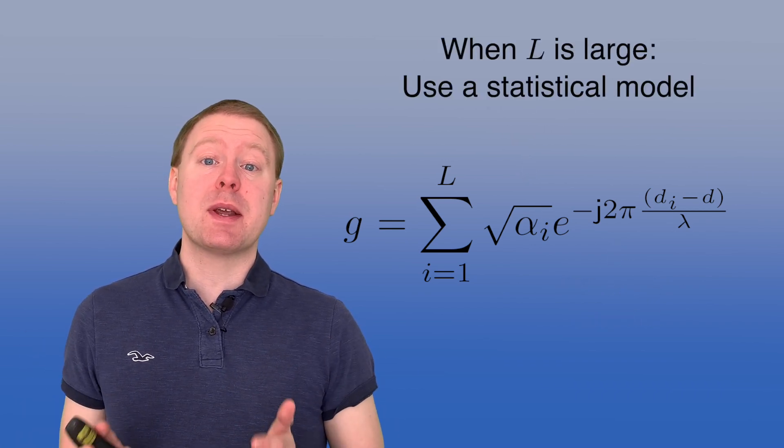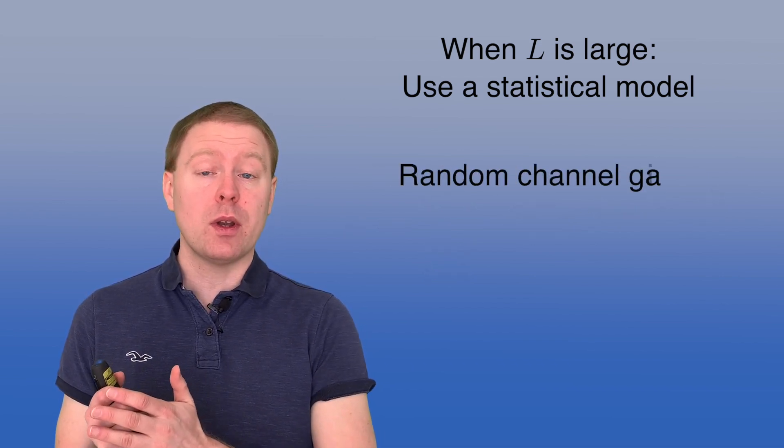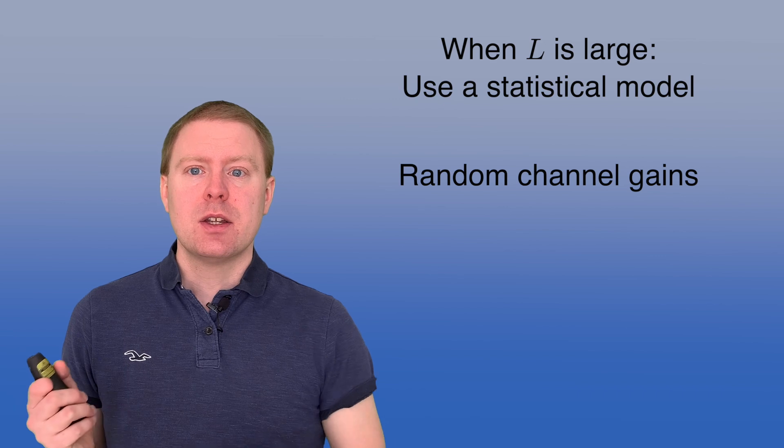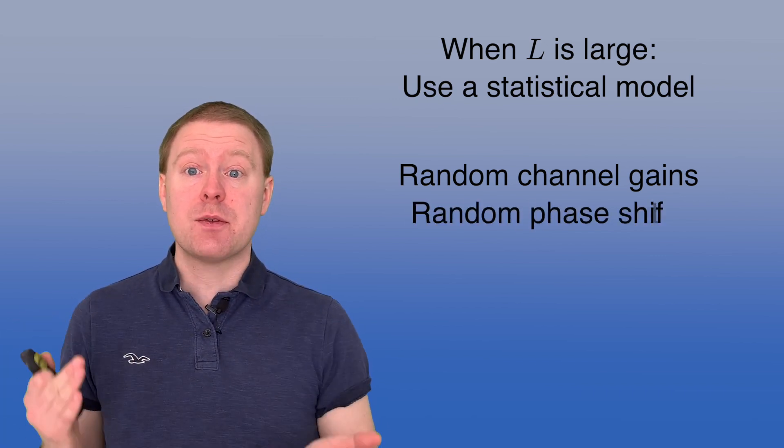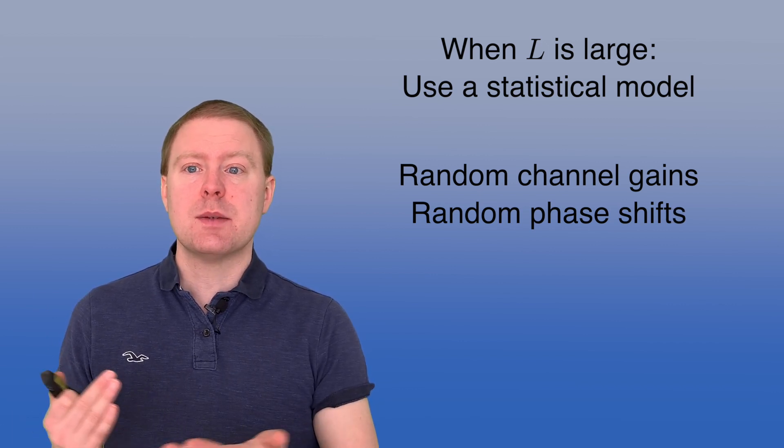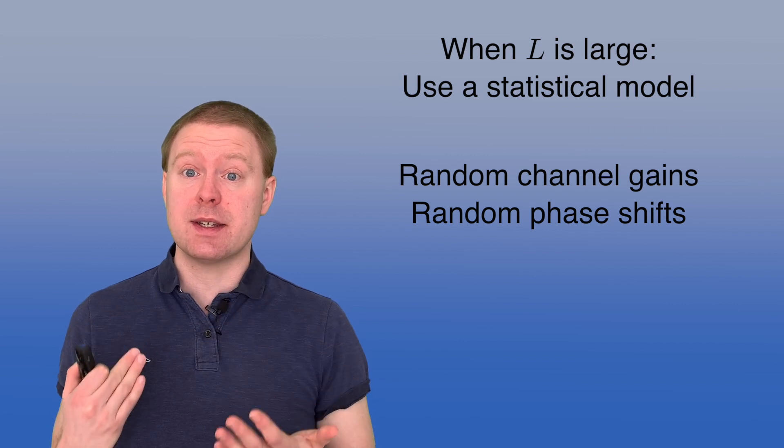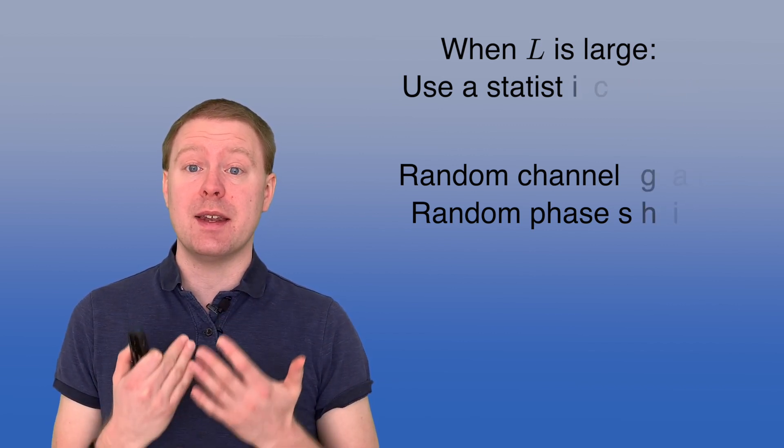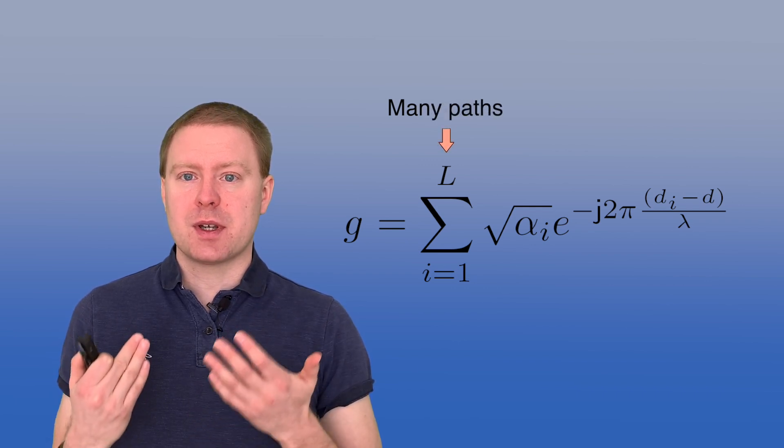When L is large, it makes good sense to use a statistical model of the channel. So if you gather all of the channel gains, alpha i's, and draw a histogram of them, it looks like a random distribution. And the phase shifts will typically be distributed between zero and 2π in an even way, because the propagation distance is so much larger than the wavelength. So we are summing up a lot of different paths.